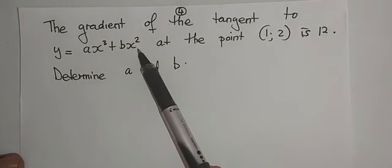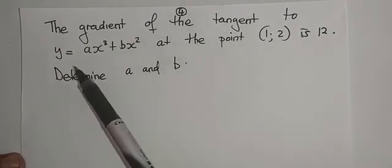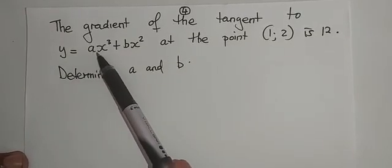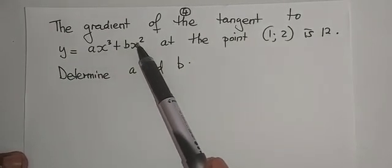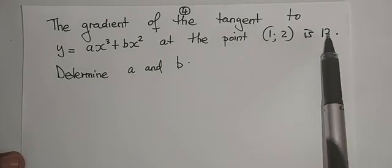On this question we are given that the gradient of the tangent to y equals ax cubed plus bx squared at the point (1, 2) is 12.